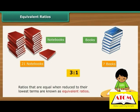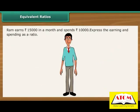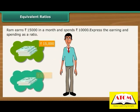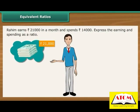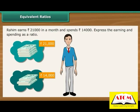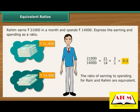Let us verify whether the following ratios are equivalent. Ram earns Rs. 15,000 in a month and spends Rs. 10,000. The ratio 15,000 by 10,000 is 15 by 10, which when reduced to lowest terms is 3 by 2, or 3 is to 2. Raheem earns Rs. 21,000 in a month and spends Rs. 14,000. The ratio 21,000 by 14,000 is 21 by 14, which when reduced to lowest terms is also 3 is to 2. The ratios for earning to spending for Ram and Raheem are equivalent.